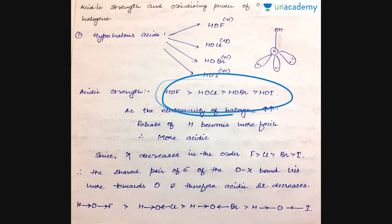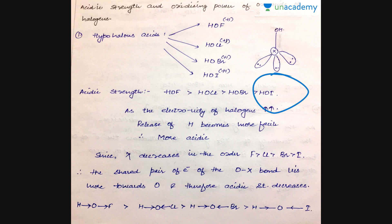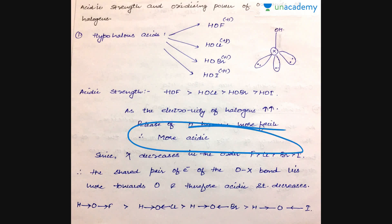As far as acidic strength is concerned, HOF is most acidic and the acidic strength decreases as we move from HOF to HOCl to HOBr to HOI. As the electronegativity of the halogen increases, the release of the proton becomes faster. In HOF, fluorine is very electronegative, so the bonding pair of electrons of the O–F bond is stretched more towards fluorine, making oxygen electron deficient.